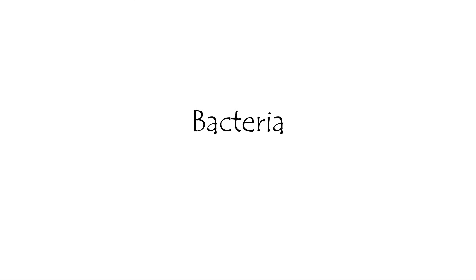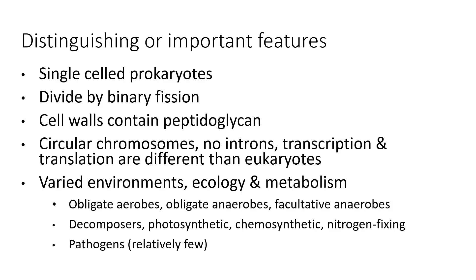Now into the living things — bacteria, our first domain. Bacteria are prokaryotic cells, meaning they have no nucleus or other complex organelles. They divide by binary fission, essentially growing larger, copying a single chromosome, and then splitting in half. Their cell walls contain peptidoglycan. They have a single circular chromosome. They don't have introns in their DNA, and their transcription and translation are quite different from eukaryotic transcription and translation.